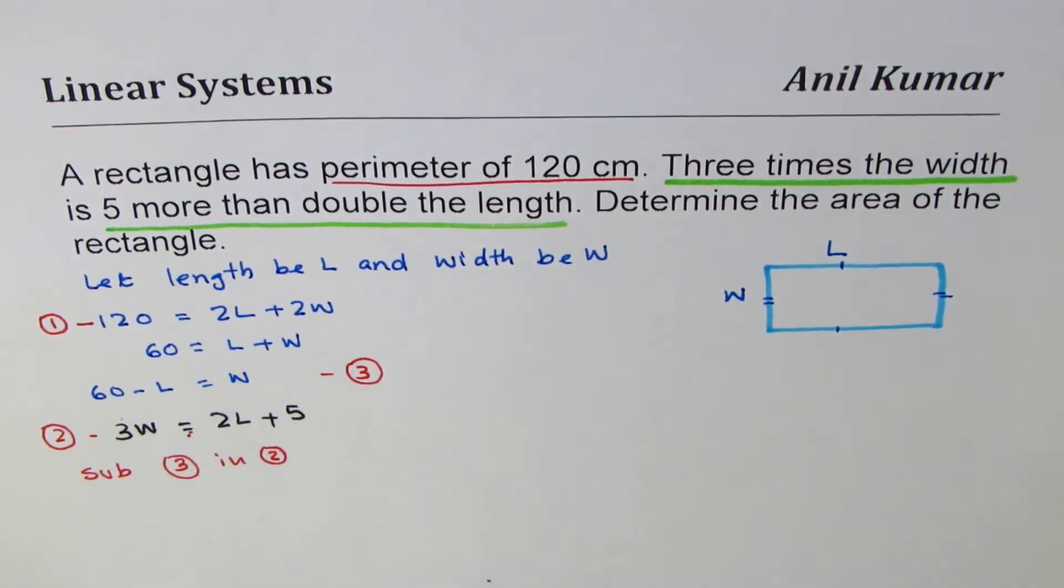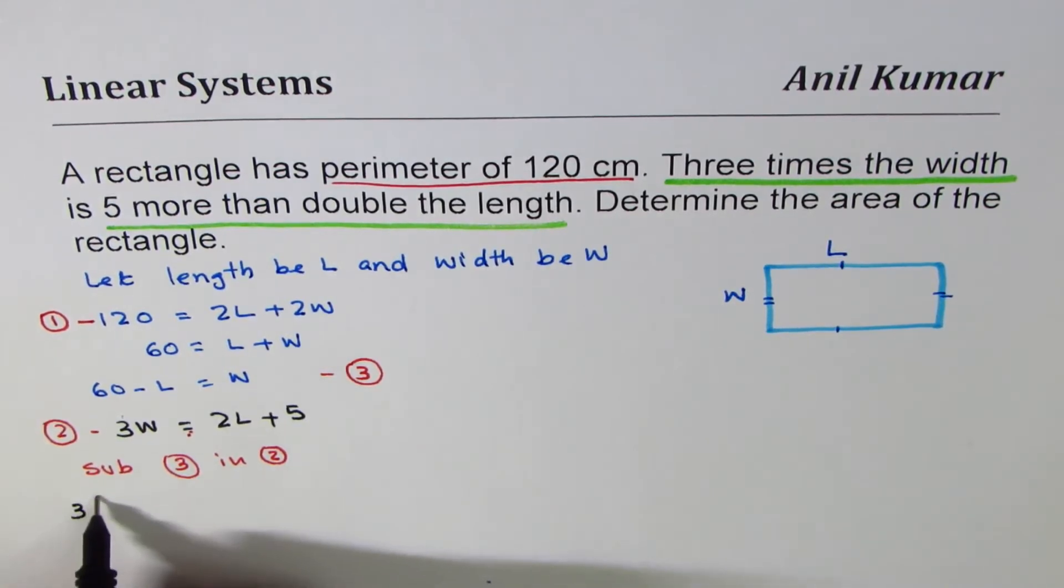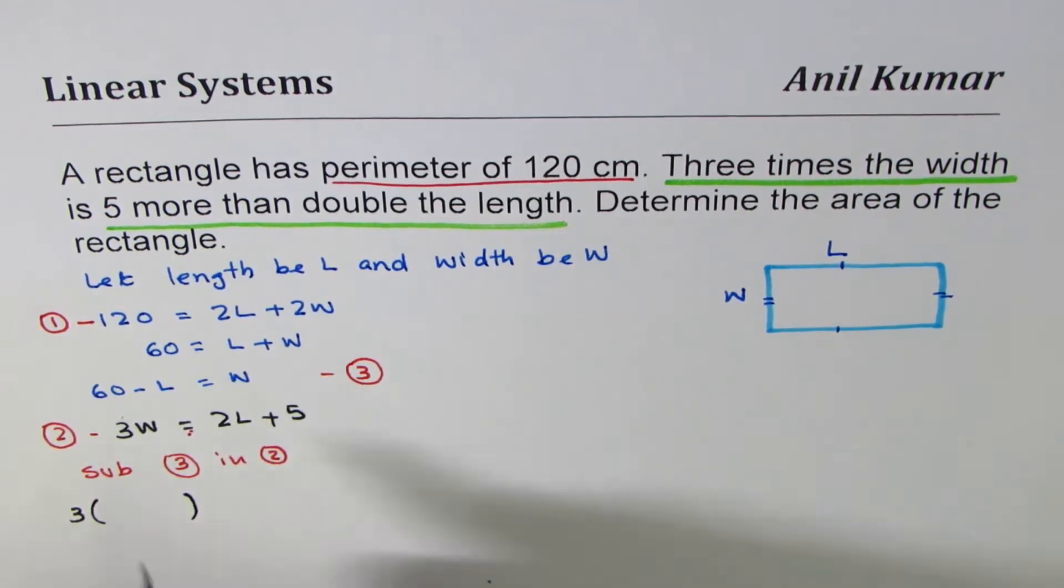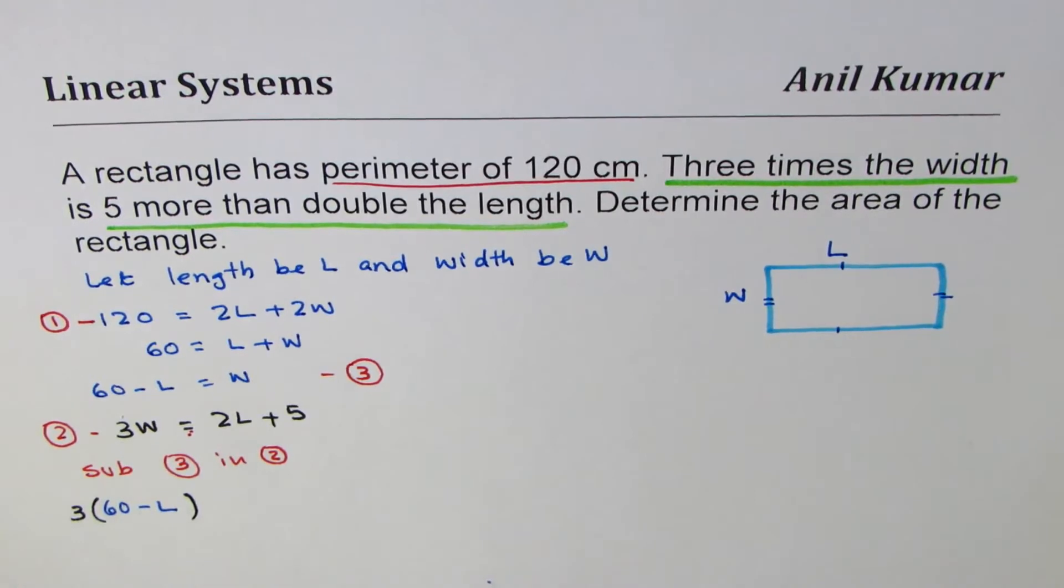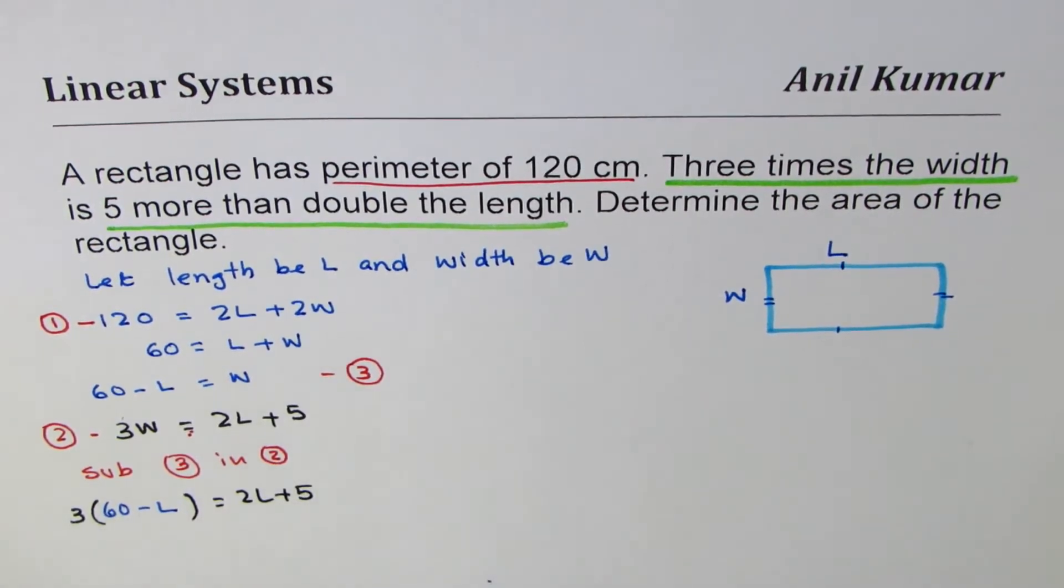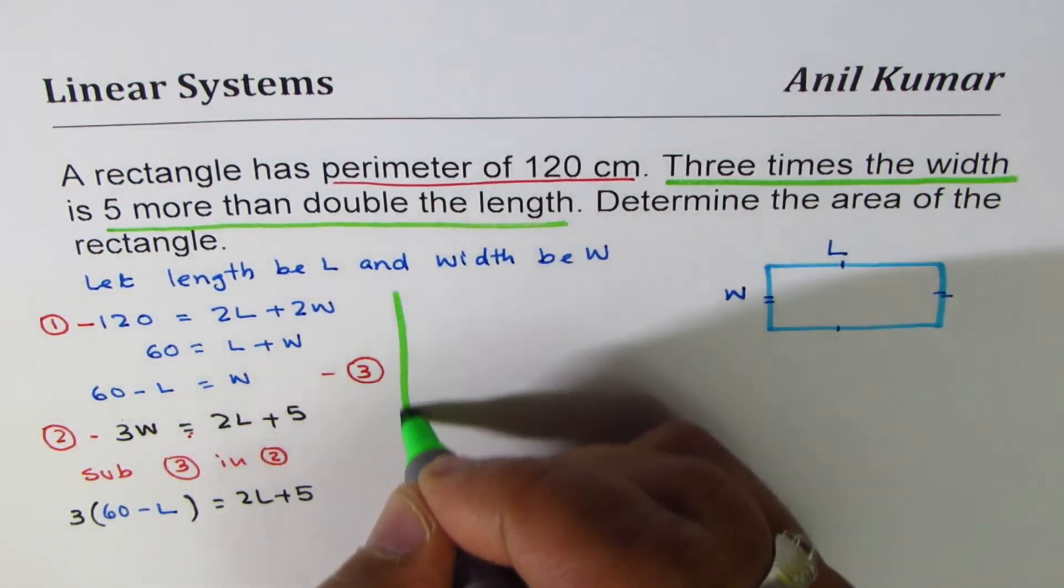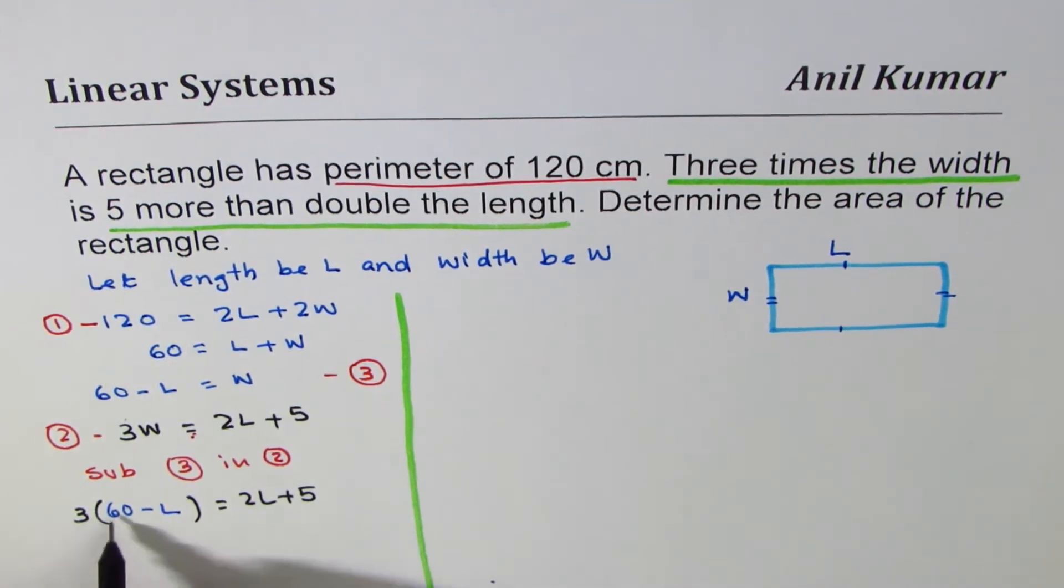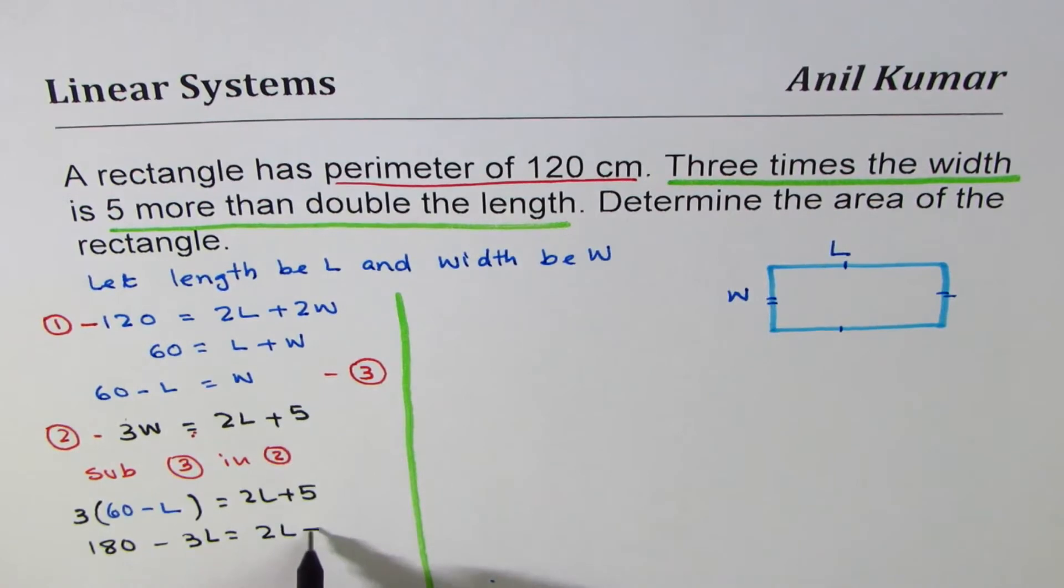I'll substitute W with 60 - L. So we get 3(60 - L) = 2L + 5. When we do this substitution, we eliminate one of the variables, so we have a linear equation in one variable. Now it's very easy to solve. 3 times 60 is 180, so 180 - 3L = 2L + 5.